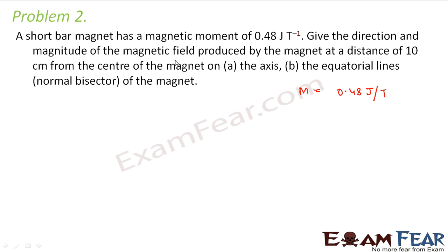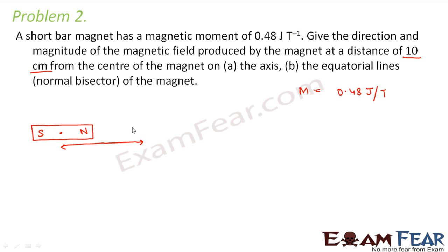Give the direction and magnitude of the magnetic field produced by the magnet at a distance of 10 centimeters from the center of the magnet — on the axis and on the equatorial lines of the magnet. Let us suppose you have a bar magnet with two poles. In part (a), you have to calculate the magnetic field at point P, which lies on the axis at a distance of 10 centimeters from the center of the magnet.